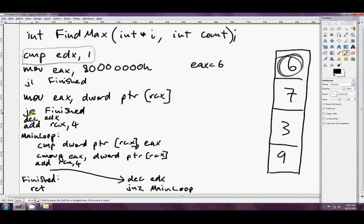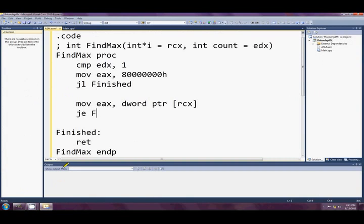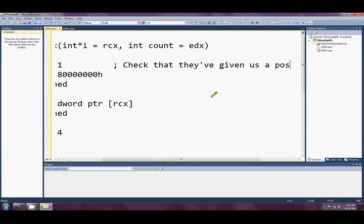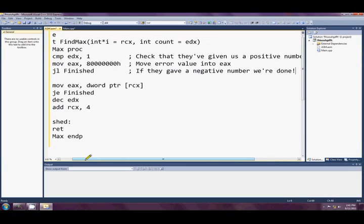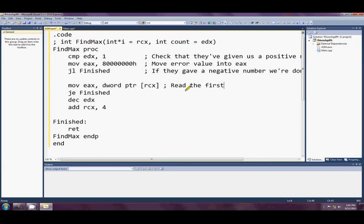Okay, so we've got our finished label and we've made sure they don't give us any stupid values like zero or negative four hundred for our count. Silly sausages. The next thing: mov eax dword pointer rcx. Okay, so we read the first value. Oops, ptr rcx. And then what? Je finished, dec edx, add rcx 4.